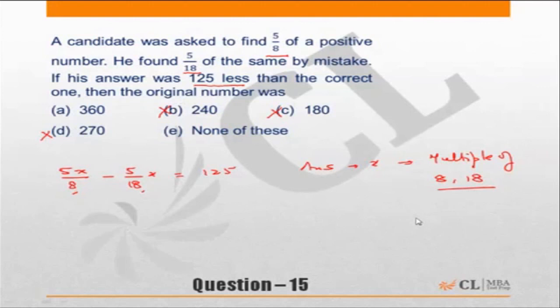So our answer in this particular question can either be 360 or none of these. Since you have eliminated three of the choices, let's check out what is 5/8 of 360 and 5/18 of 360 and check out the difference between the two. If it is equal to 125, that's the answer, otherwise none of these is the answer.